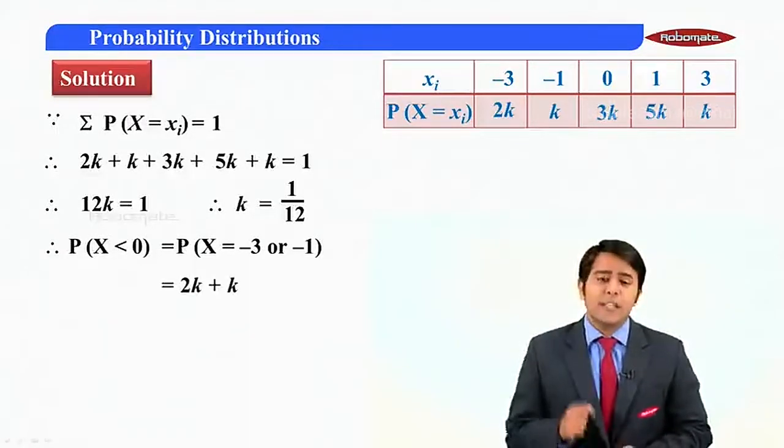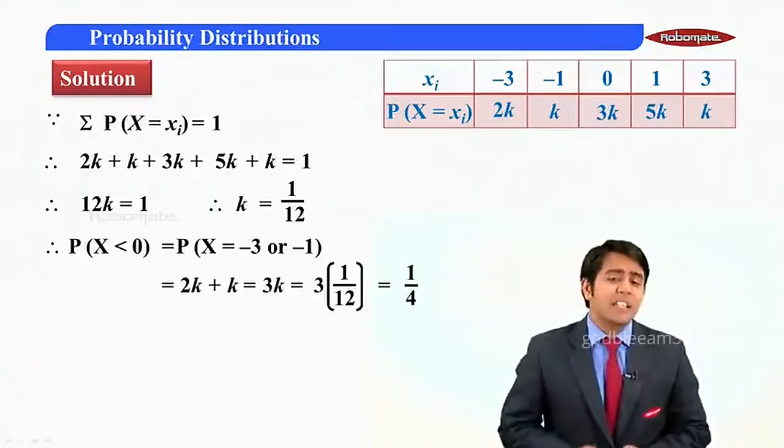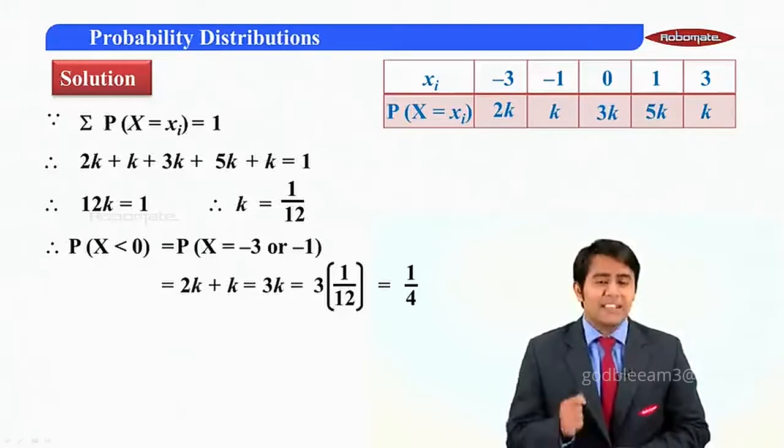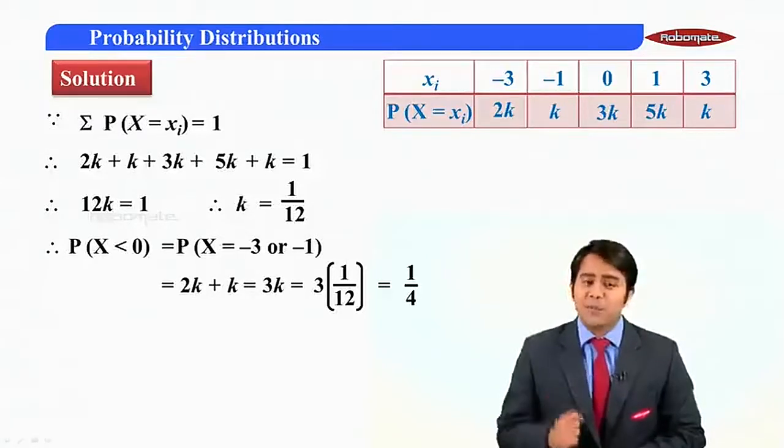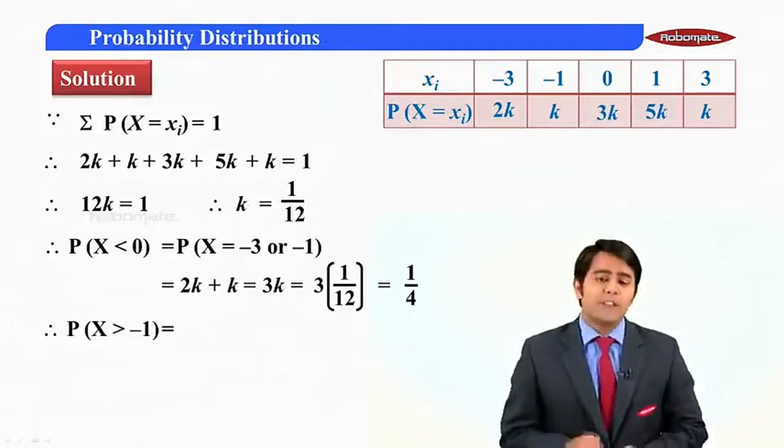So the values will be 2k plus k which is 3k, which is nothing but 3 into 1 by 12. And this value will be simplified to 1 upon 4. So p of x less than 0 is 1 upon 4. Now moving further,